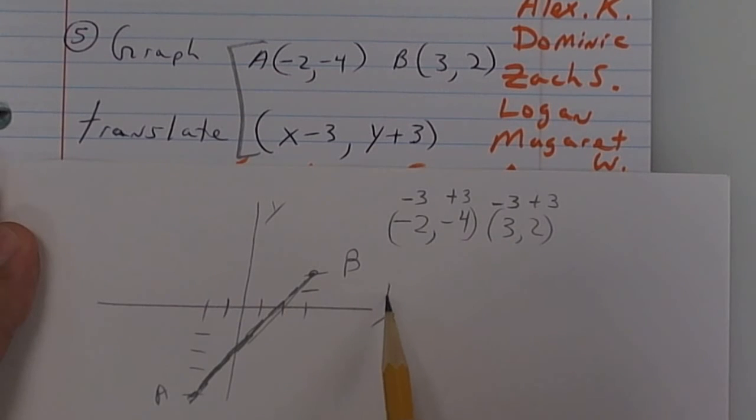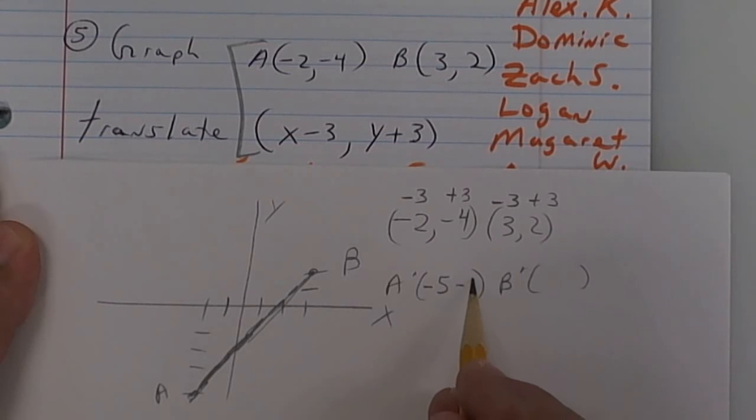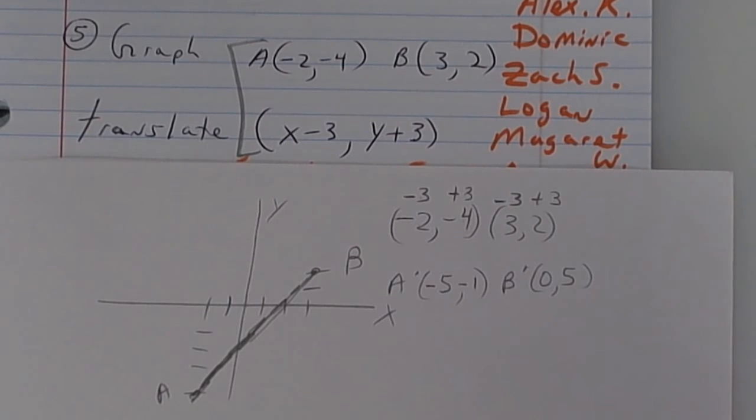Let's write the new points. So put A prime and B prime. So if I do a minus 2 and a minus 3 I get a minus 5. This one is going to give me a minus 1. It's really not hard so don't make it hard. It's not. I want you to graph these new points.